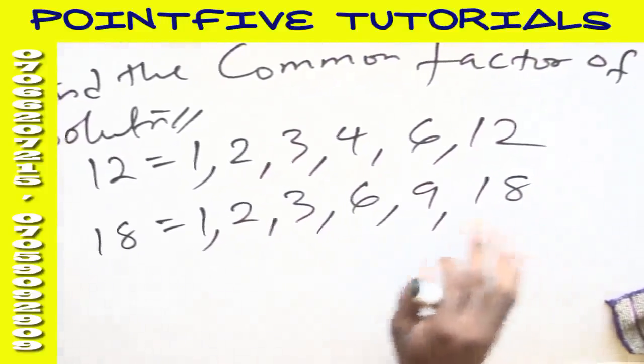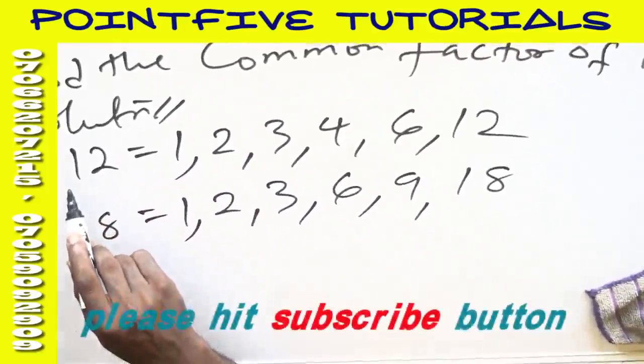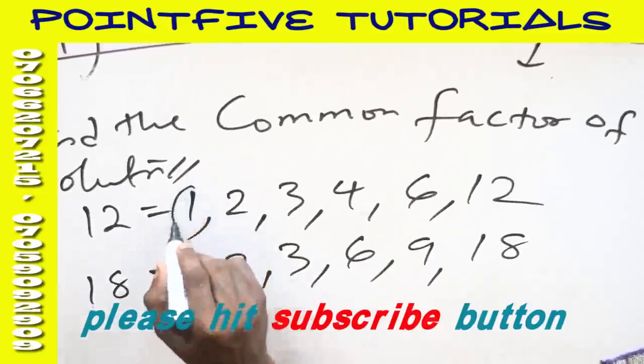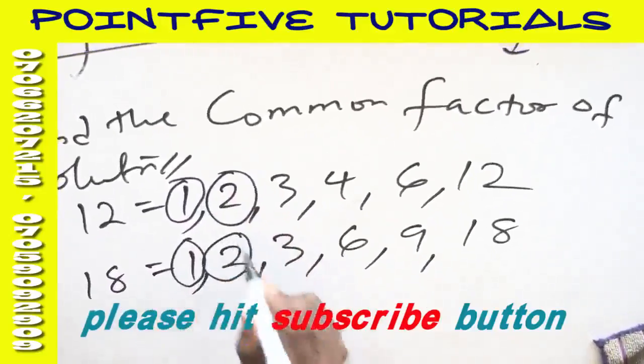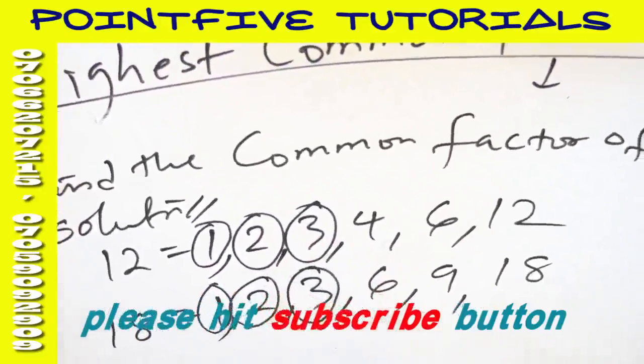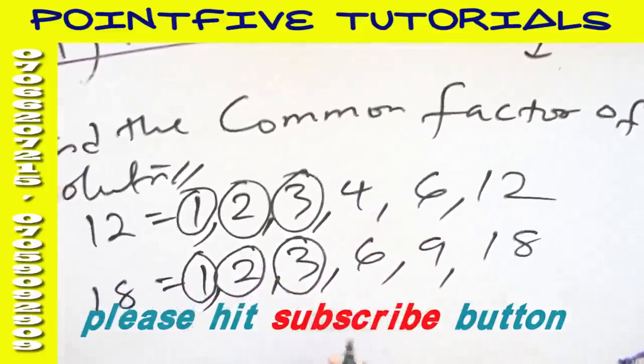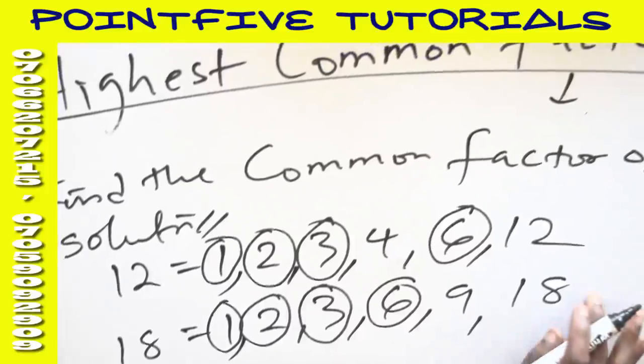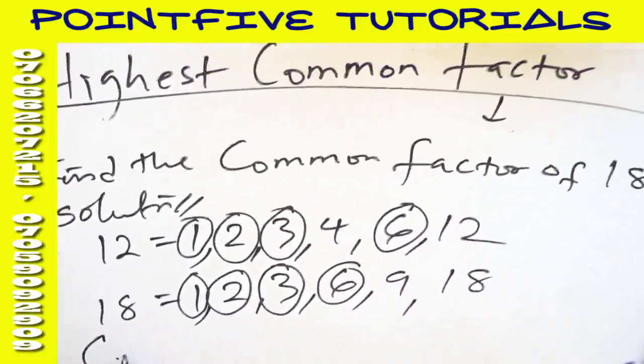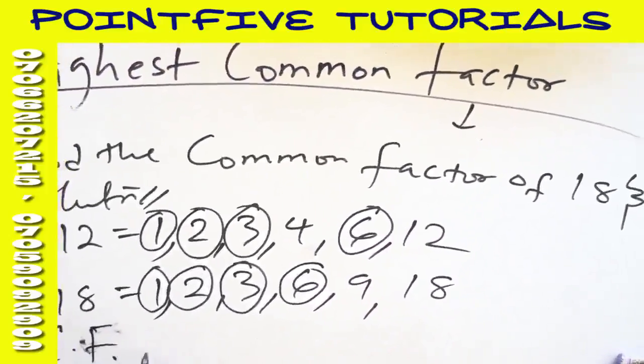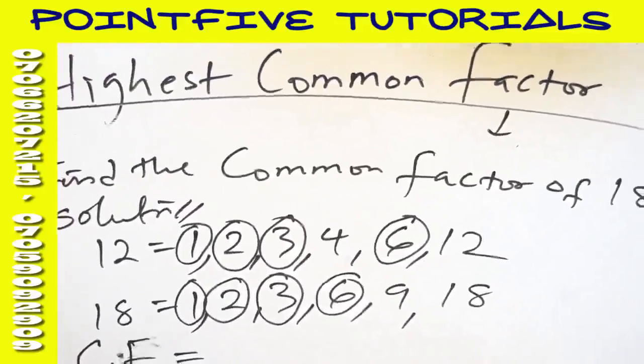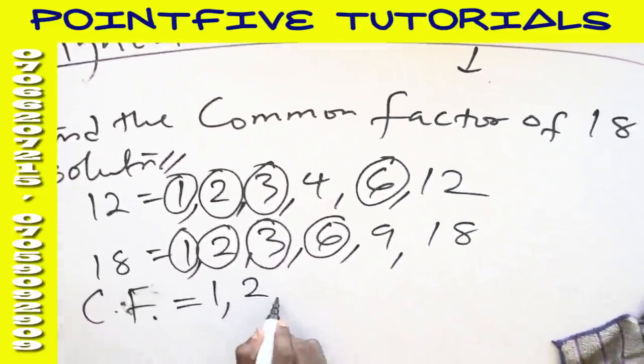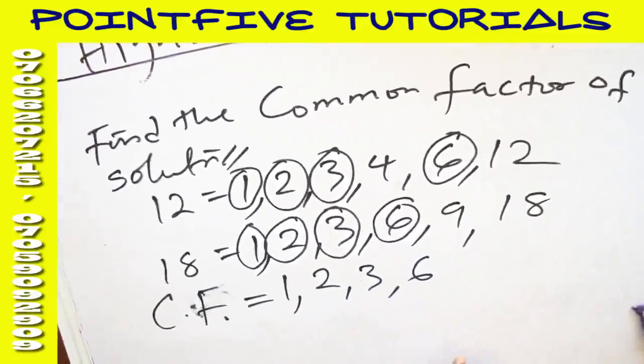Now common factors come into play. You ask yourself, you check the factors of 12 that are also the factors of 18. I'll call it CF. CF means common factors in my own parlance. It will be those numbers that we have circled, the numbers that are common. We have 1, 2, 3, and 6. These are the common factors.